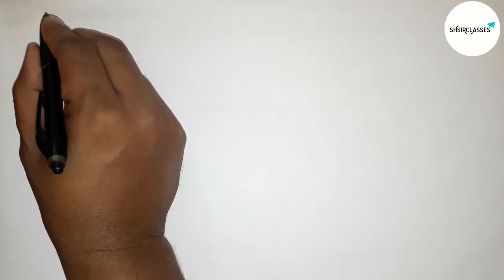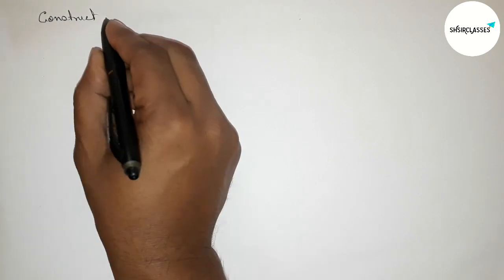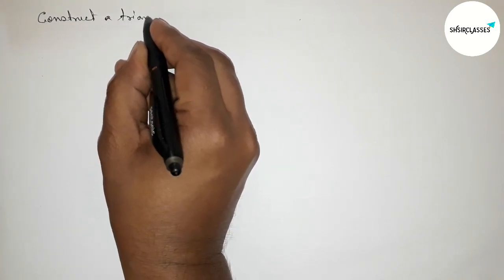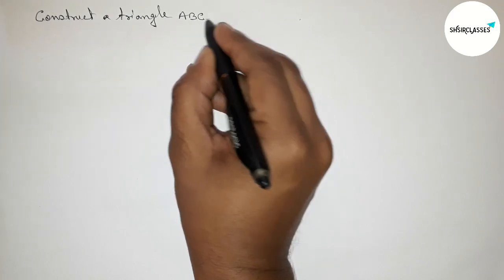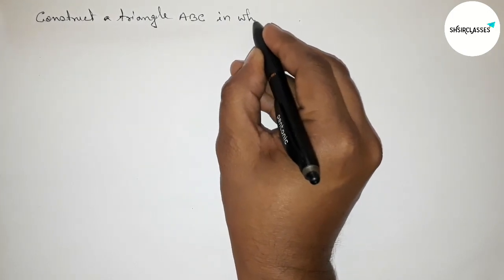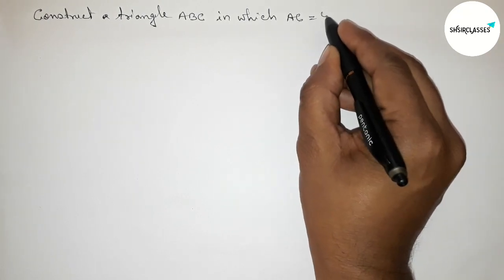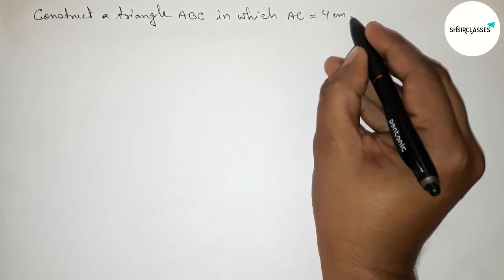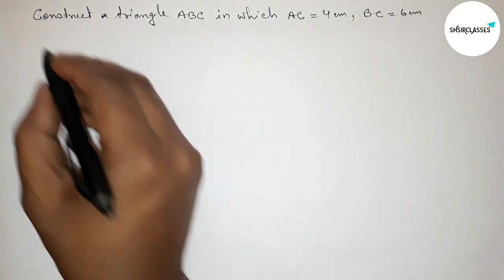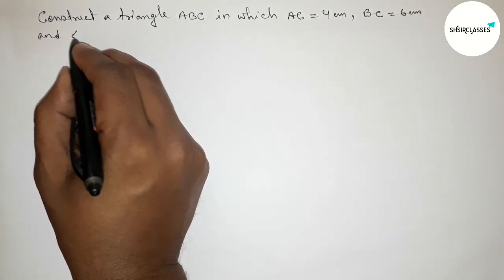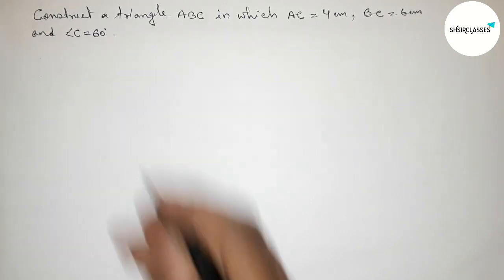Hi everyone, welcome to SI Share Classes. Today in this video we have to construct a triangle ABC in which AC equals 4 centimeter, BC equals 6 centimeter, and angle C equals 60 degrees. Please watch the video till the end. Let's start.